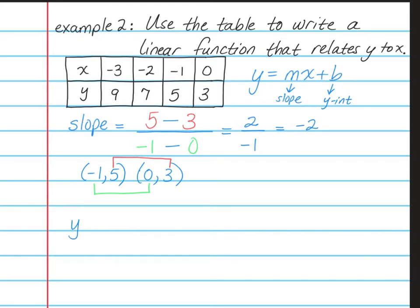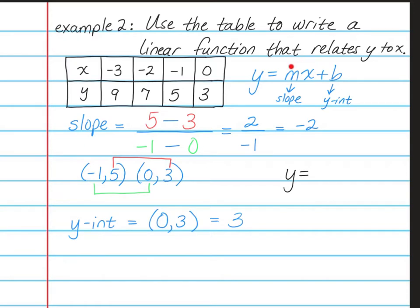So now we need to find our Y-intercept. Our Y-intercept is a point that has 0 as its X, because any time I graph a point with 0 as an X, I'm going to end up on the Y-axis. So if you look at your four points, 0 as an X is here — that means that 0, 3 is my Y-intercept. So my Y-intercept is positive 3. Now we write our answer: Y equals negative 2X plus 3. That is the answer of the function for this XY table.